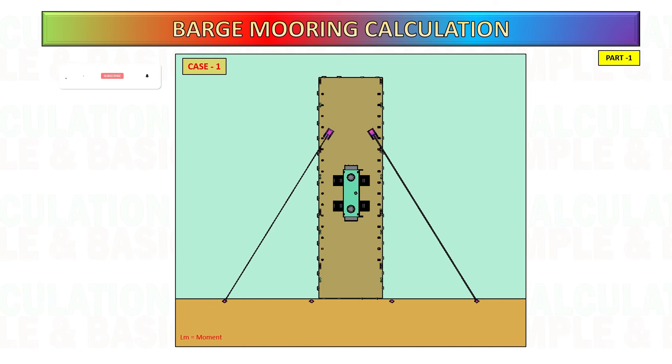For mooring analysis, let's consider two cases. Case number one: forces acting on the left-hand side of the barge or port side. Due to external forces acting on the barge, it will cause the barge to move or tilt. We need to calculate the moment forces.